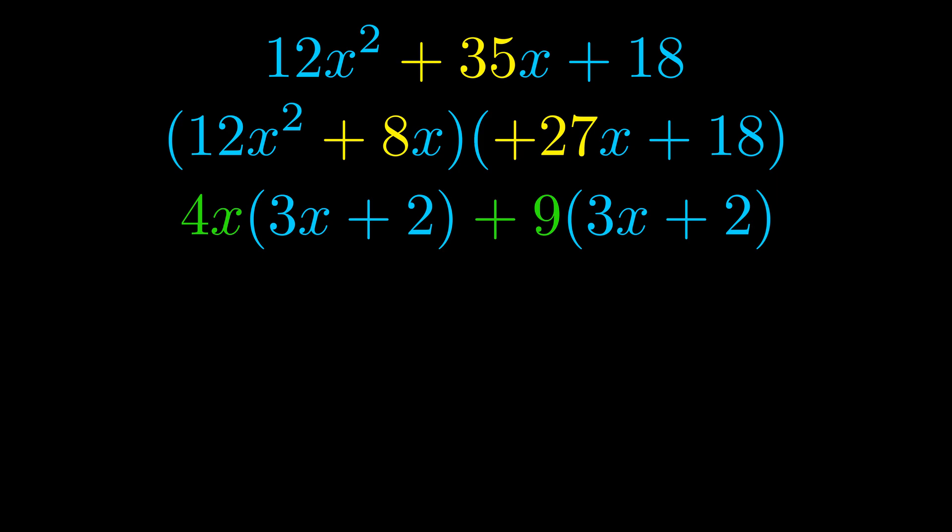Notice also how what remains inside of the parentheses is the same in both cases. The blue values are the same. Those blue values will become one of our factors and we will combine the two green values, the GCFs that we pulled out, to get the other one. And that is our fully factored equation.